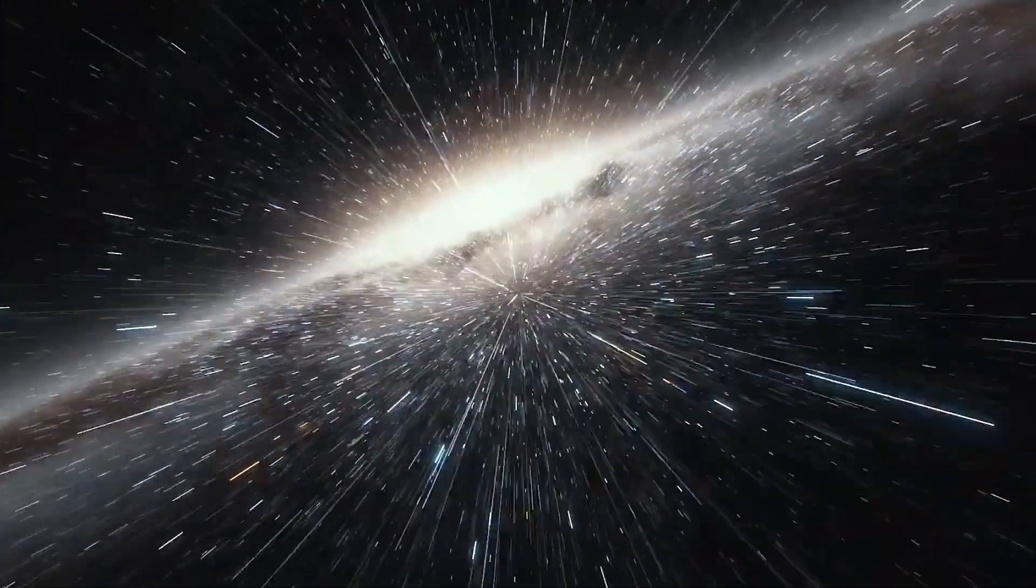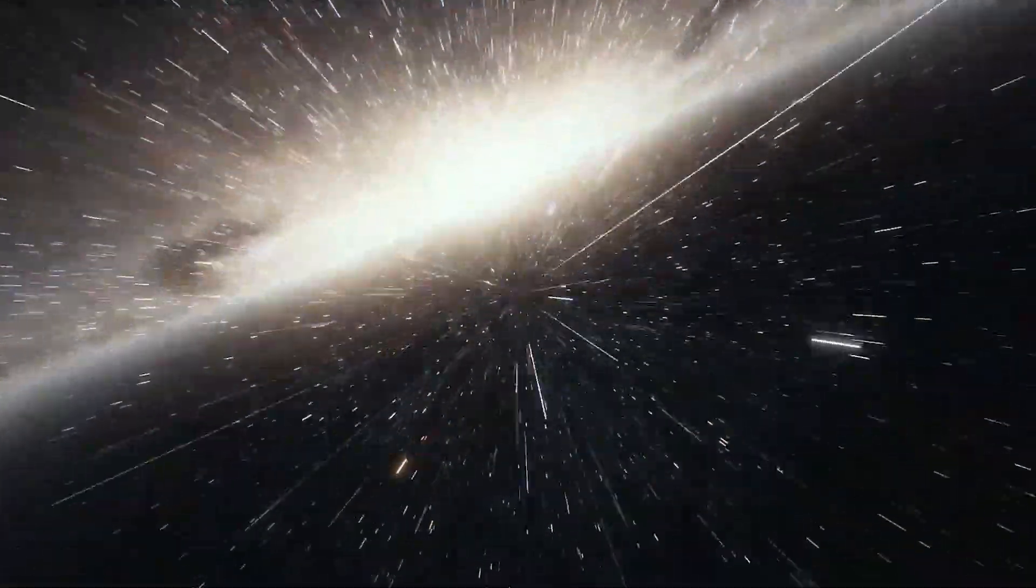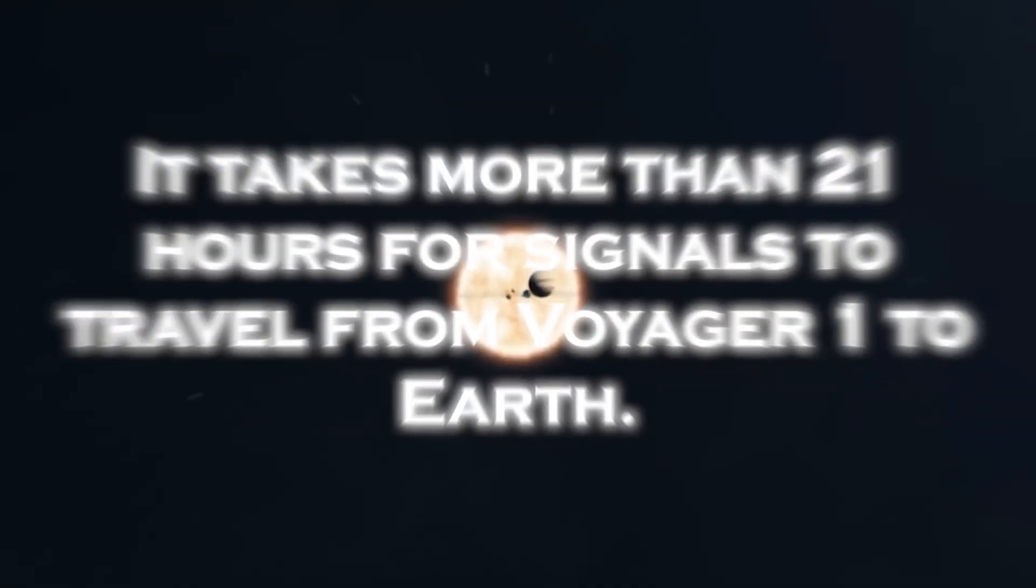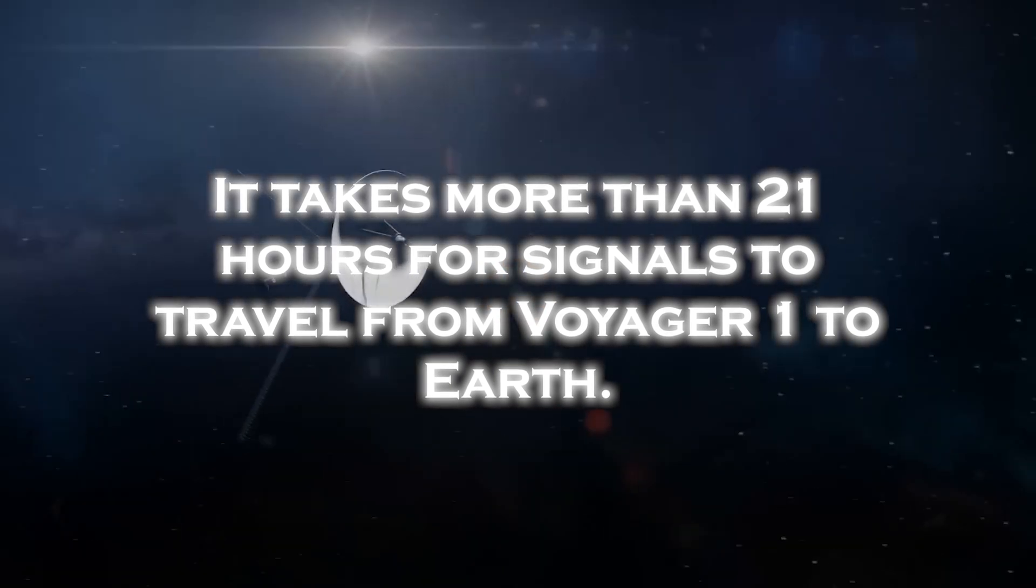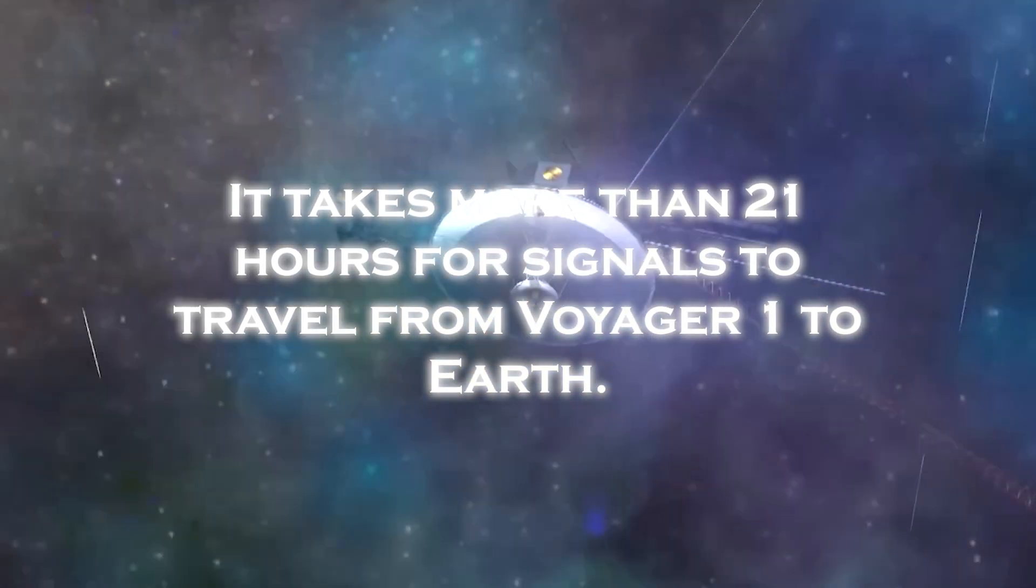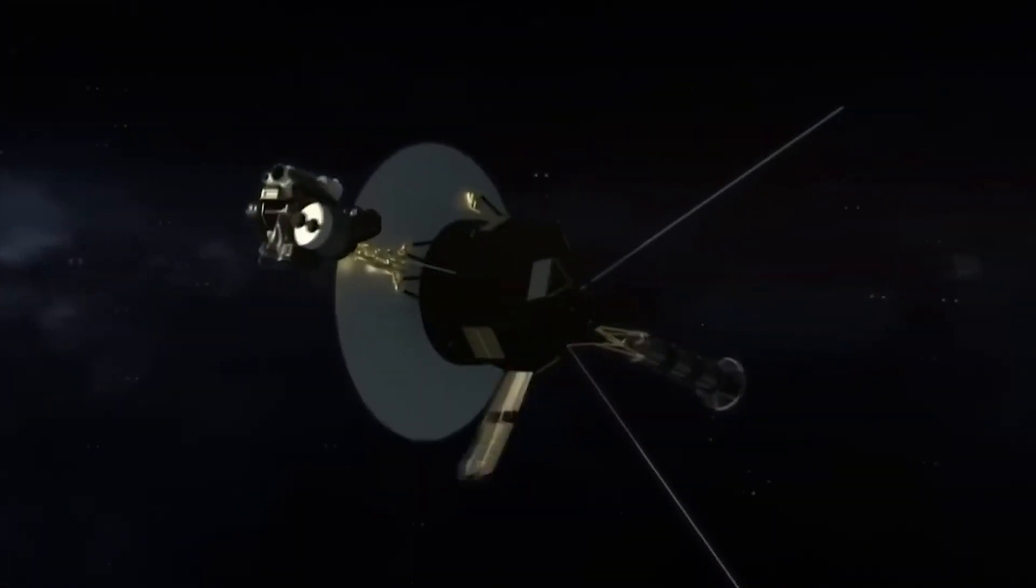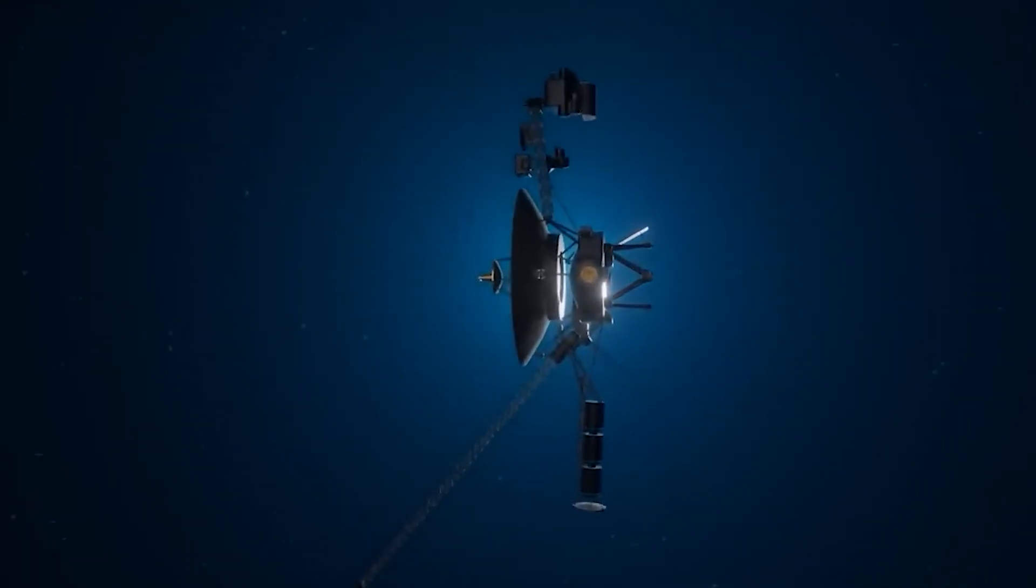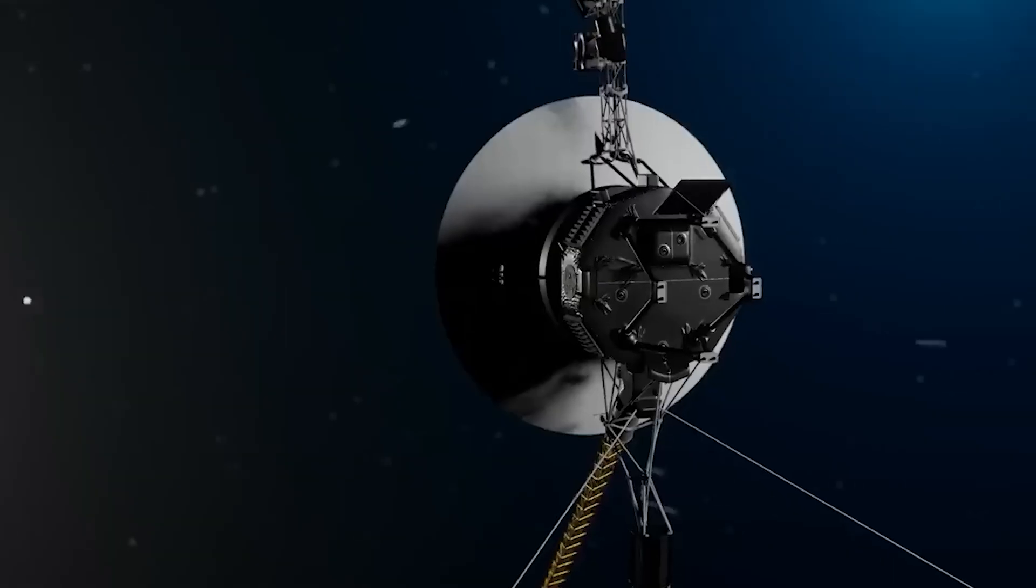As the spacecraft ventures into interstellar space, Voyager 1's signal strength has weakened. It takes more than 21 hours for signals to travel from Voyager to Earth. The weak signal, combined with the interference from background noise, makes it difficult to transmit and receive data.